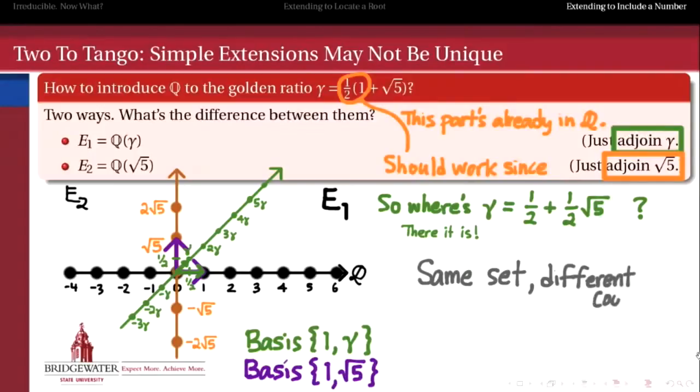So we get the same set. Every element we can locate in E1, we can also locate in E2. And so really there's no difference in the structure of these sets. The only difference is in the basis that we've put down on top of those sets. And when we change the basis in linear algebra, we change the coordinates that we use to express each element of E1 and E2.